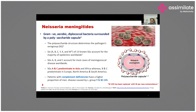Serogroups A, B, and C account for most cases of meningococcal disease globally. A and C are predominant in Asia and Africa, whereas B and C are predominant in Europe and both North and South America. Patients with complement deficiency have a higher proportion of meningococcal disease caused by serogroups Y and W.